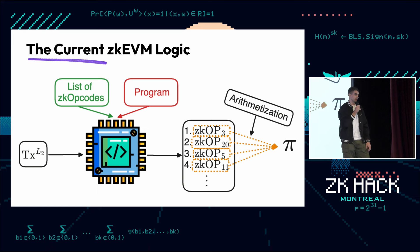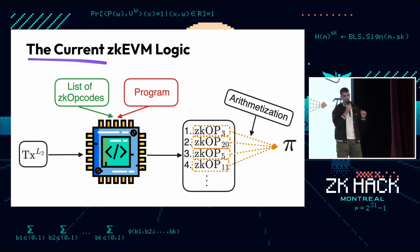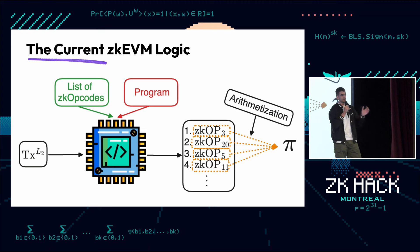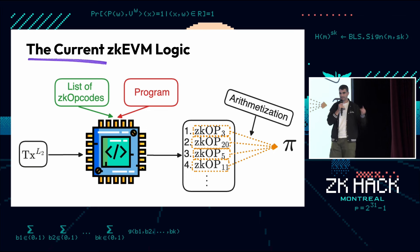We generate a proof that not only the individual ZK opcodes of every transaction are correct, but also that they follow the correct logic. Theoretically, the EVM program is hard-coded in the ZKVM, which means you could substitute it with any other program and convert the ZKVM to a ZKVM for another chain — you can extract the Ethereum part from the question.